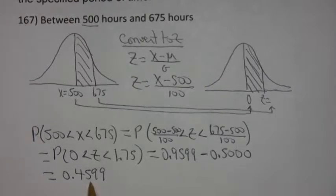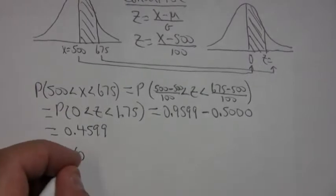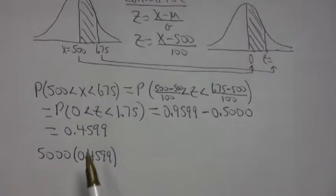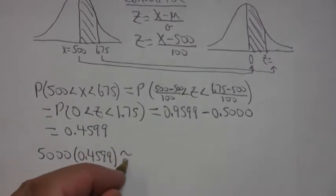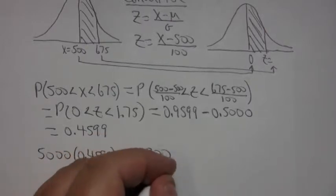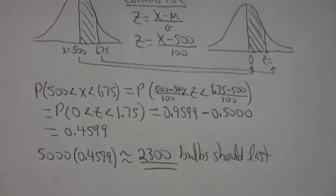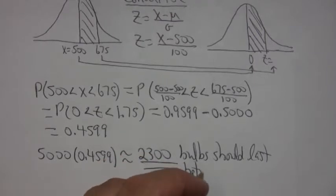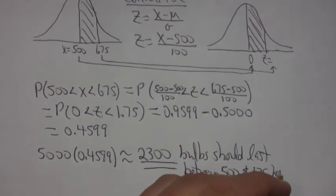So almost 46% of those bulbs should last between those two times. If there are 5,000 bulbs, and 45.99% should last in that interval between 500 and 675, then I just multiply 5,000 times the probability, and we're going to round it off to the nearest bulb. And if you do that arithmetic, you come out with about 2,300. So about 2,300 bulbs should last between 500 and 675 hours.